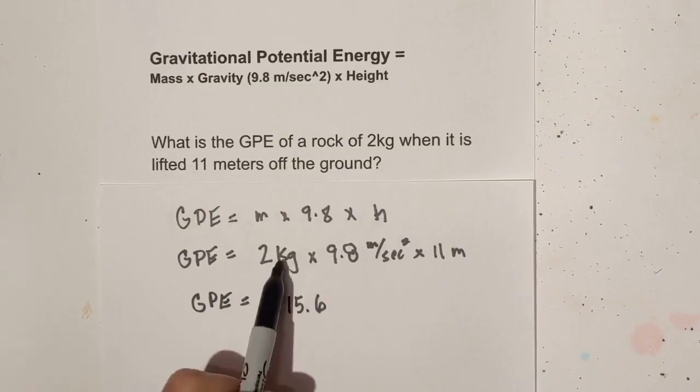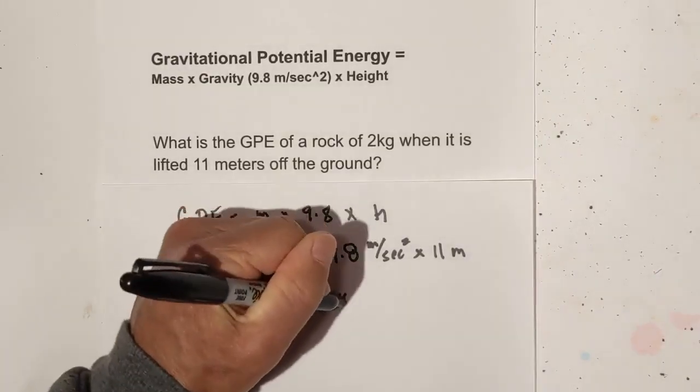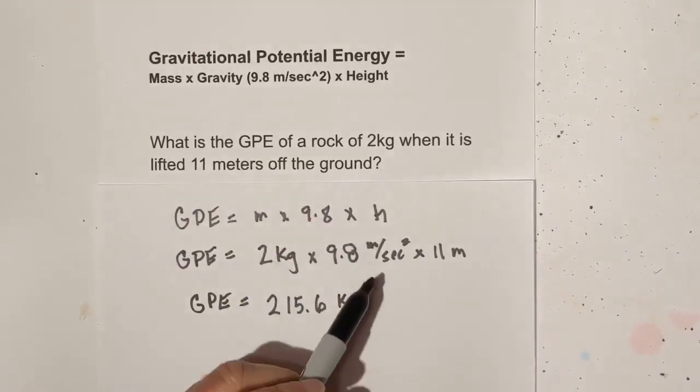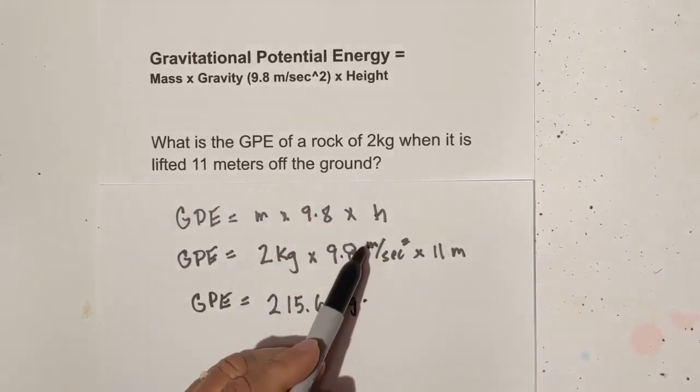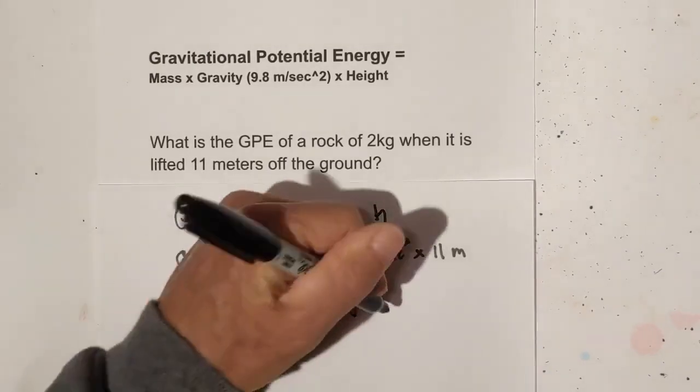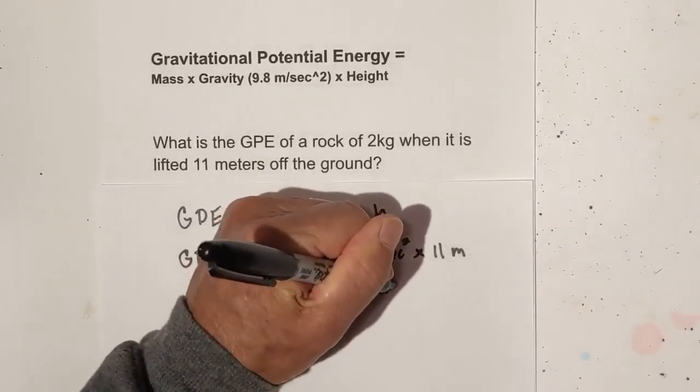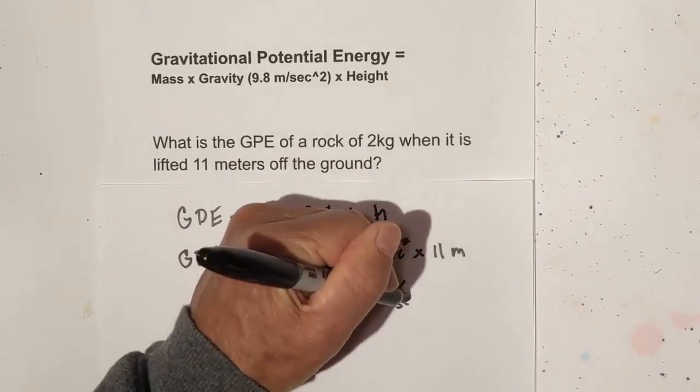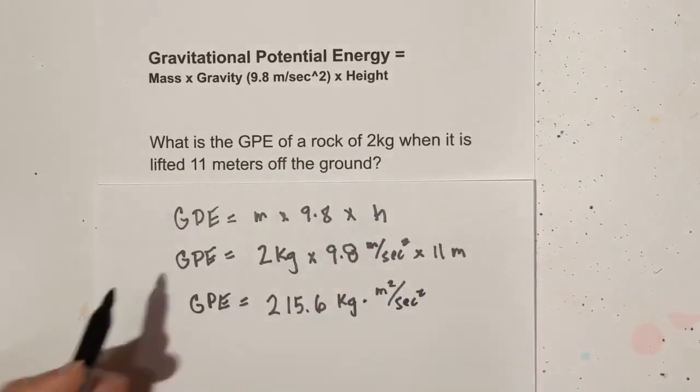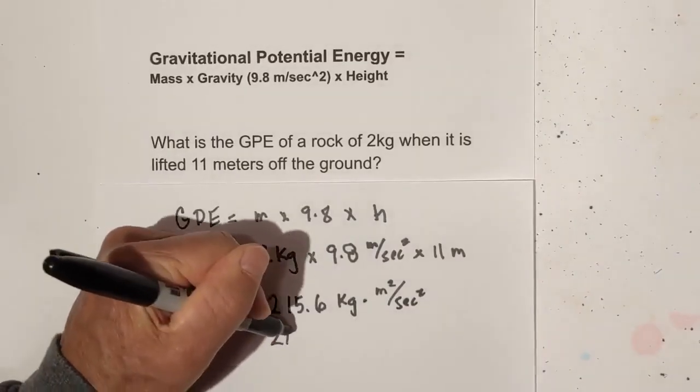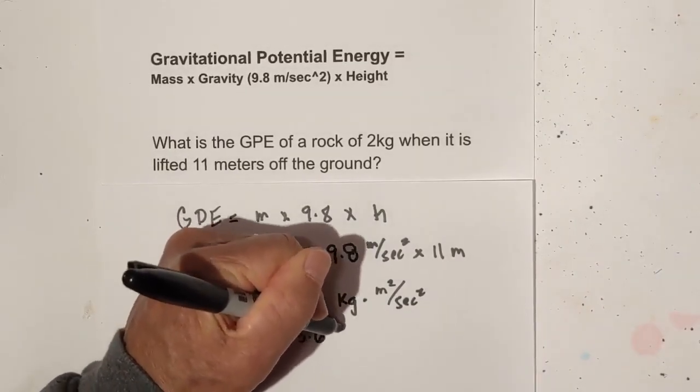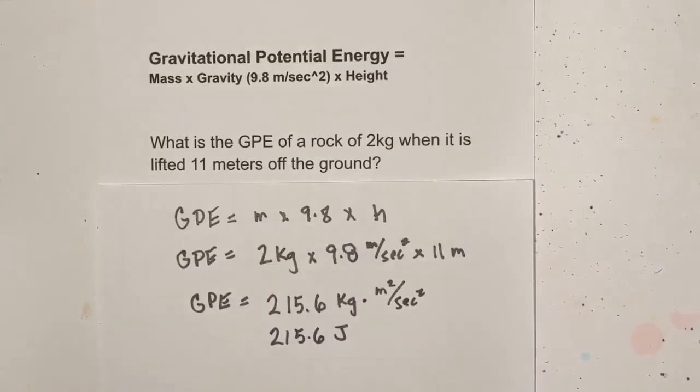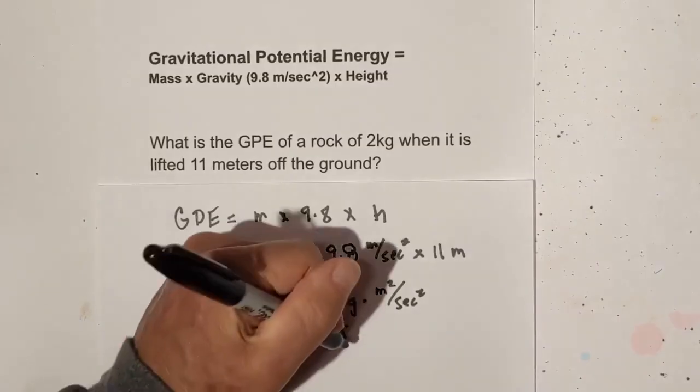If you take your units, you multiply kilograms, you only have one of those, you don't have any like terms. Then you take meters times meters, so that becomes meters squared, and you have seconds squared. And lo and behold, that is a joule. So the unit of measure for gravitational potential energy is a joule.